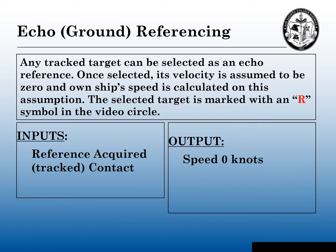On most ARPAs, you can echo-reference your radar, which will also ground-stabilize it. Basically, any tracked target can be selected as an echo reference — a ship or a buoy. Once selected, that target's velocity is assumed to be zero knots, and own-ship speed is calculated based on that assumption. When you select the echo reference, the system places an R right next to that contact.